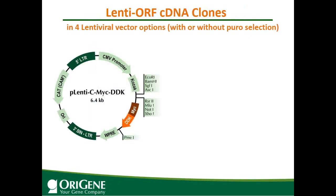Now, more details about lentiviral ORF clones. Any gene's ORF is provided in four different lentiviral vector options, with or without puromycin selection. The lentiviral C-myc-DDK vector has your ORF cloned in frame with the myc-DDK tag, so the protein will have a C-terminal DDK tag. You can use the tag antibody if no protein-specific antibody is available, or use the tag for affinity protein purification. DDK is the same as FLAG, and ETA-DDK antibody beads or FLAG antibody beads are commonly used.